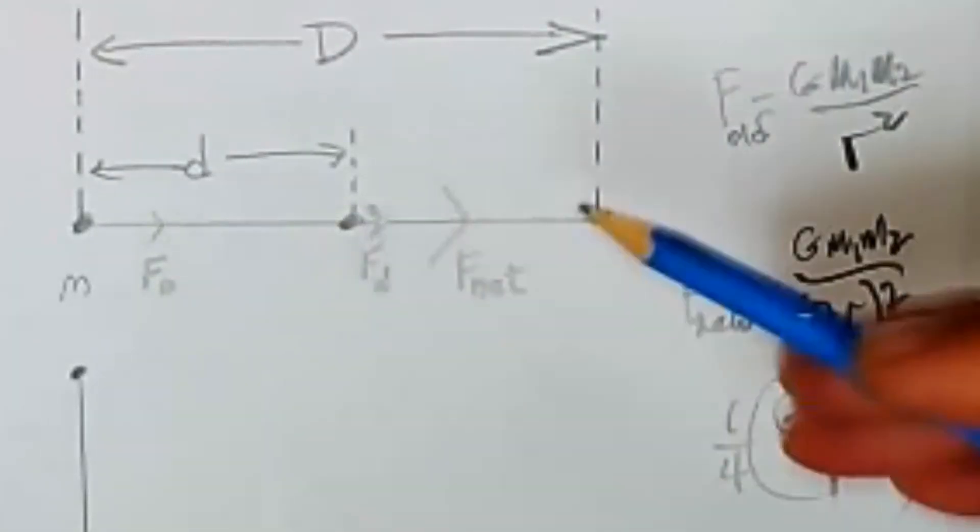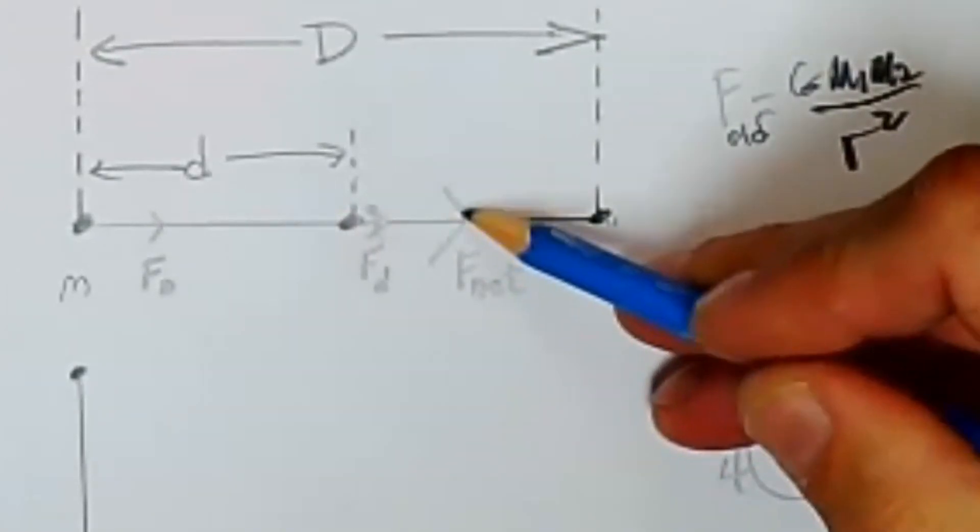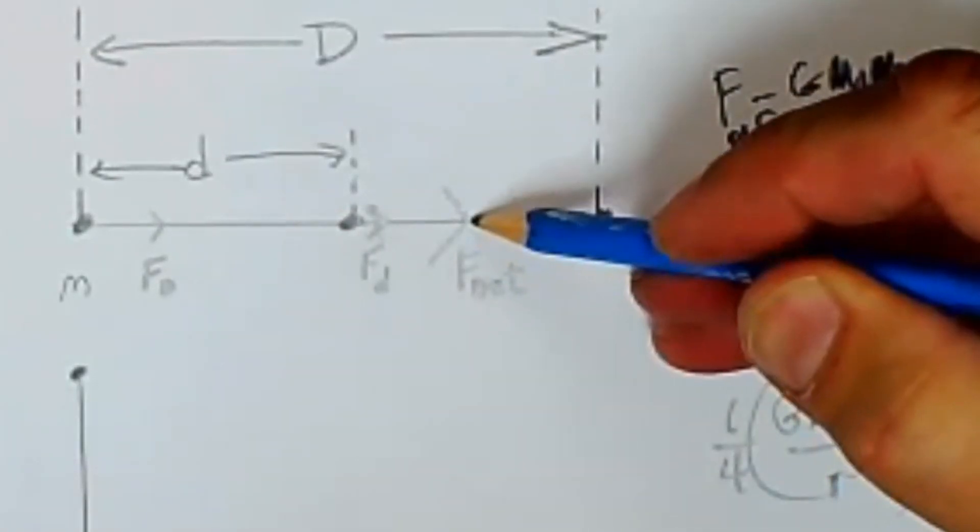And when I add them together, I get this vector. So my net force is to the right with this relative magnitude.